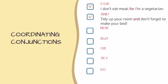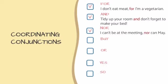In the second sentence, 'and' connects two imperative clauses: 'tidy up your room' and 'don't forget to make your bed.' In the third sentence, 'nor' connects two clauses. When using 'nor,' the clause after it must be in question form — an auxiliary verb must follow 'nor,' and then the subject. So it is 'can may,' not 'may can.'